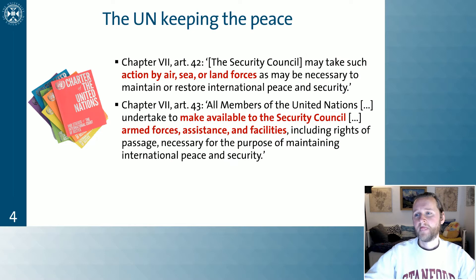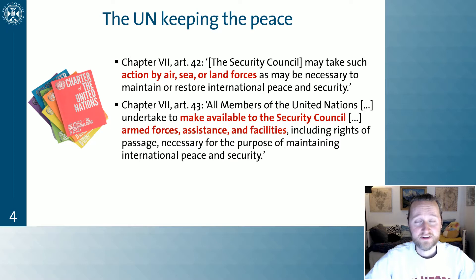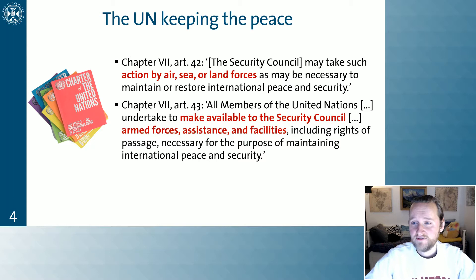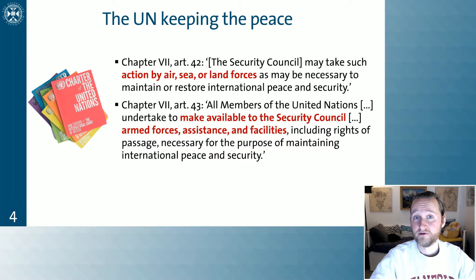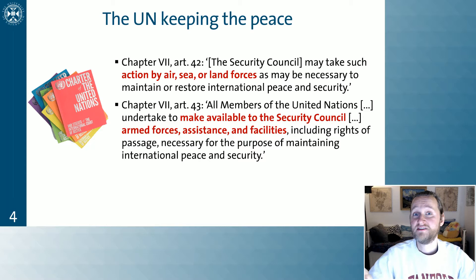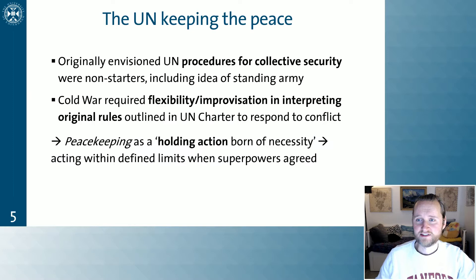Under Chapter Seven, the Security Council is empowered to take any action by air, sea, or land forces as necessary to maintain the peace — nothing is really off the table. Furthermore, Chapter Seven, Article 43 says that all members of the UN undertake to make available to the Security Council their armed forces, any assistance and facilities. So not only can the Security Council authorize any action, it can also call on all other member states — not just Security Council members or veto powers, but all UN members — to render their assistance.